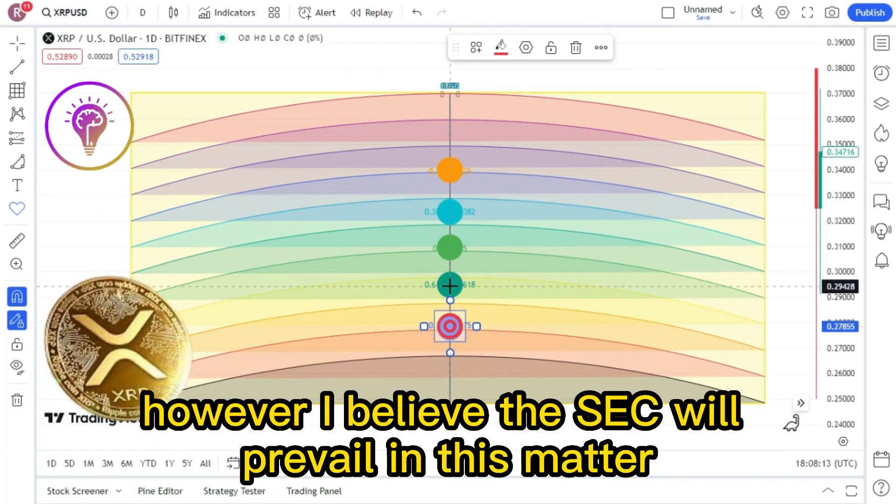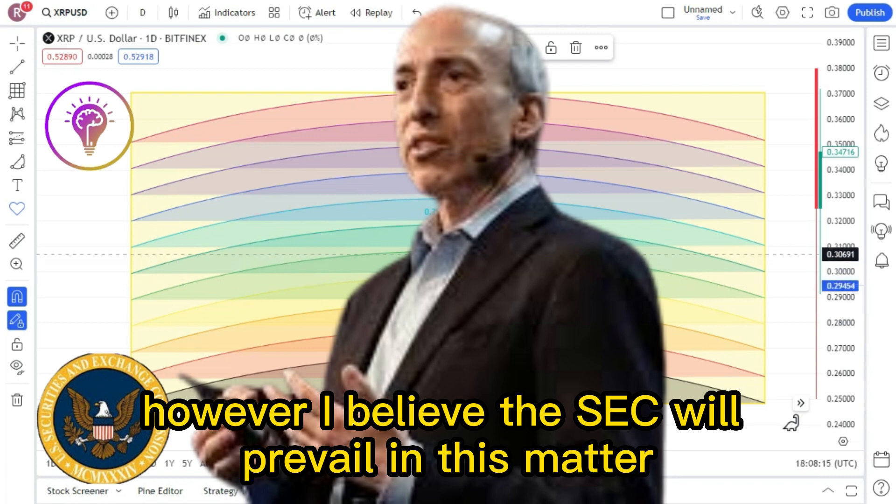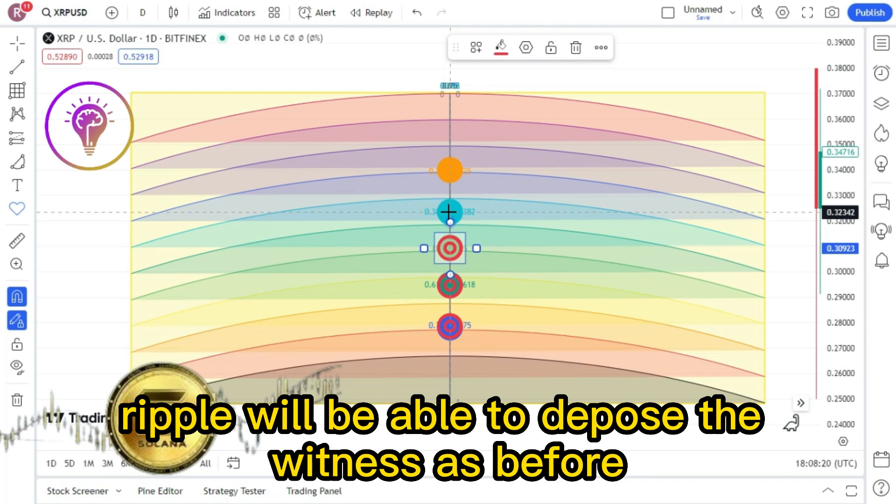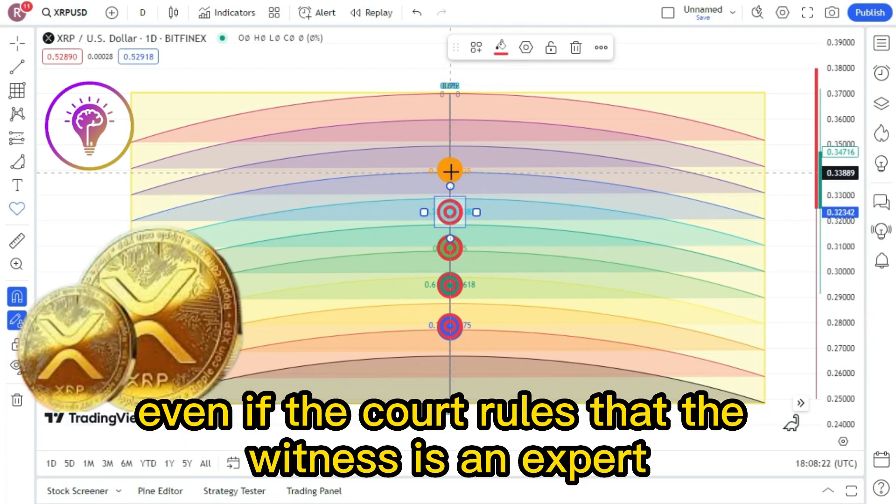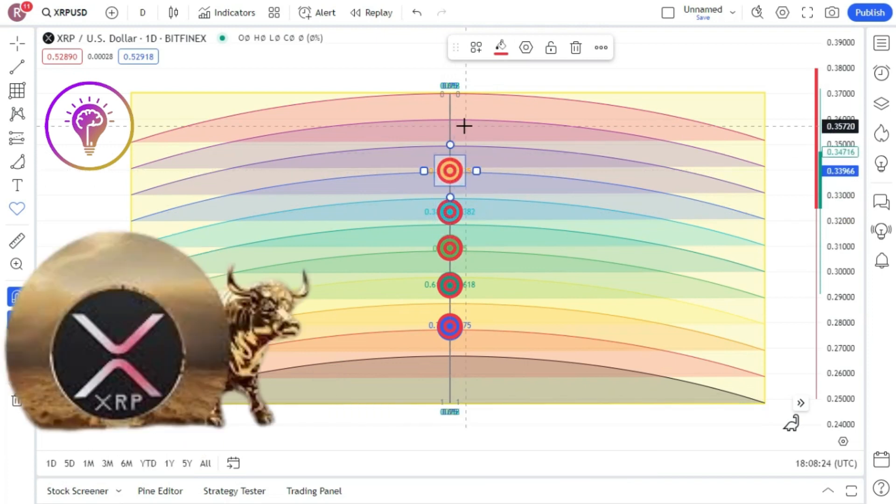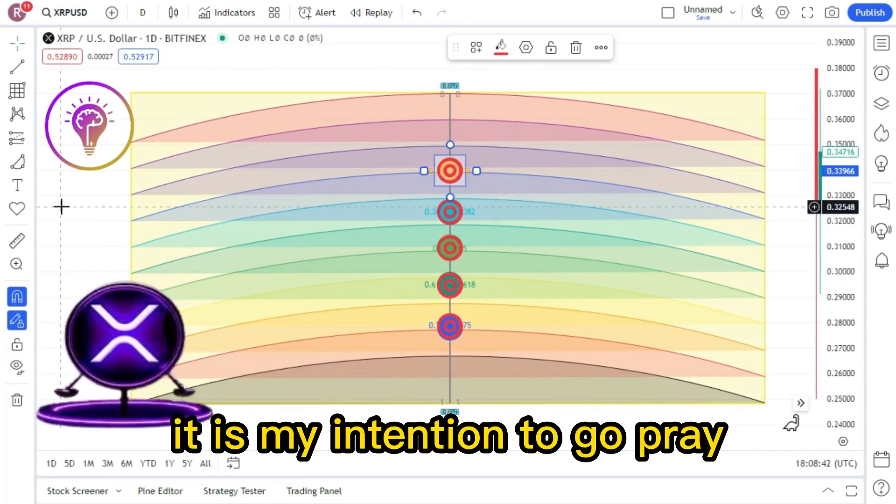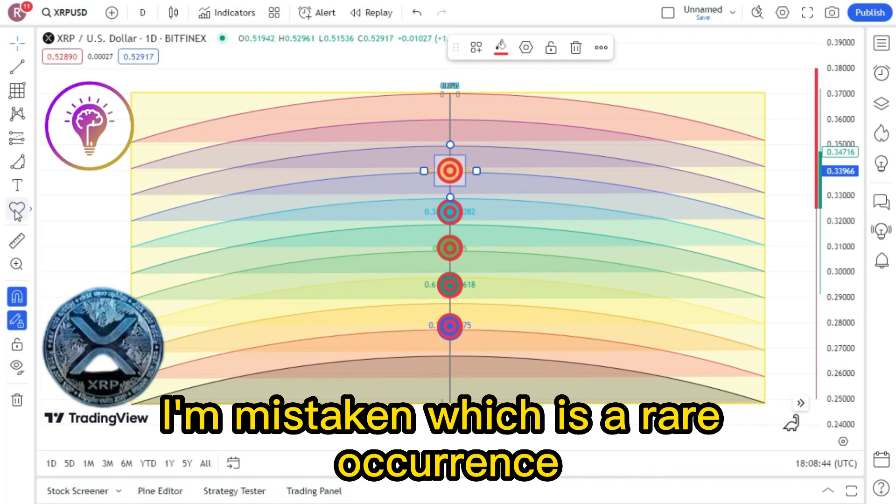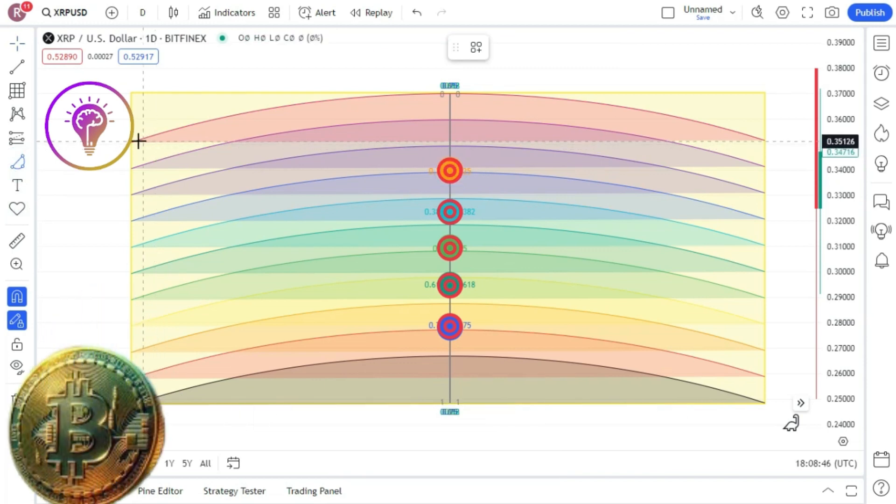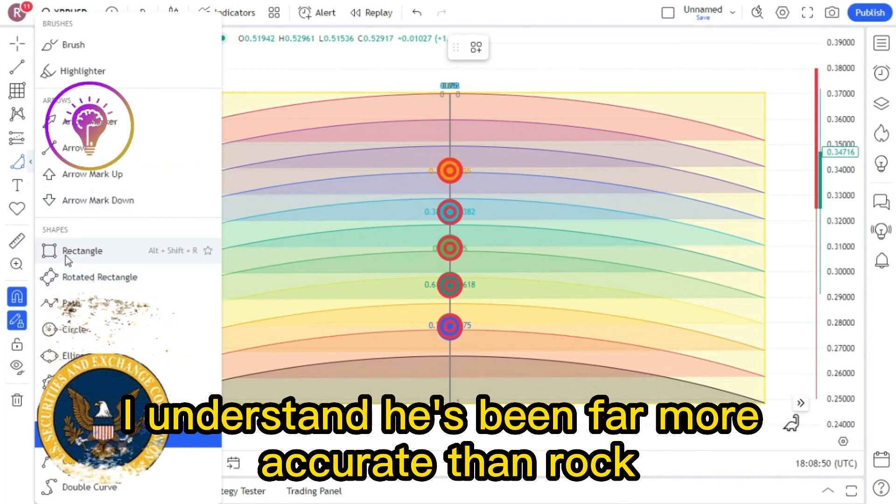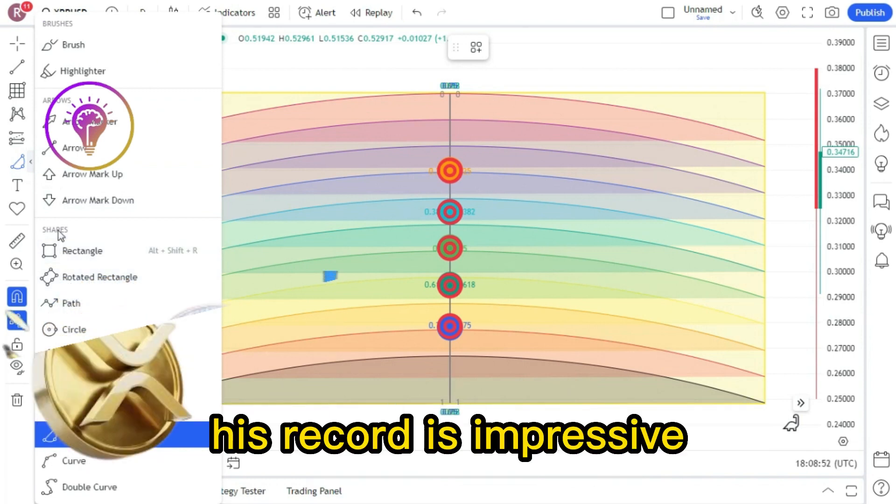According to attorney Jeremy Hogan, who provided the following, he republished the most current filing from attorney file. No crypto Twitter user has ever found it more difficult to state their belief that the SEC will prevail in this motion. However, I believe the SEC will prevail in this matter. In my opinion, Ripple will be able to depose the witness as before even if the court rules that the witness is an expert. Pardon me while I say a prayer. It is my intention to go pray. I'm mistaken, which is a rare occurrence. I understand. He's been far more accurate than most. His record is impressive.